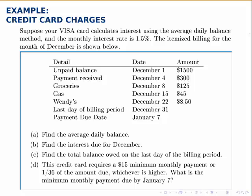Suppose your Visa card calculates interest using the average daily balance method, and the monthly interest rate is 1.5%. We're given an itemized billing statement for the month of December and we're asked four questions. First, we'll find the average daily balance. Then we'll use that to calculate the interest owed for this month. We'll add that interest onto the final balance to figure out the total balance owed at the end, and then we'll talk about the minimum payment.